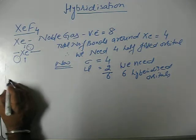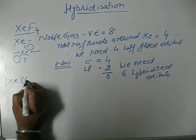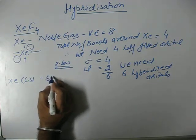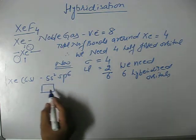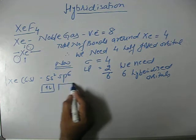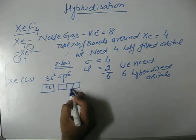Now, let's see xenon in its ground state: 5s2, 5p6. Therefore, it is completely filled configuration in its ground state.